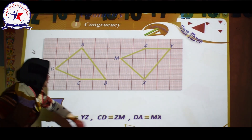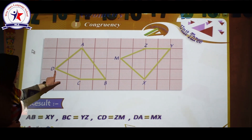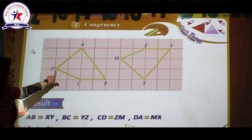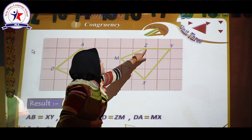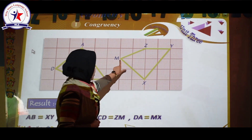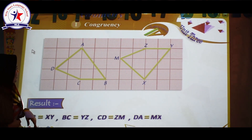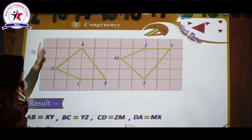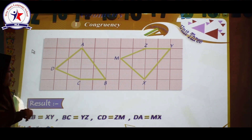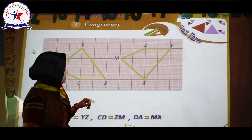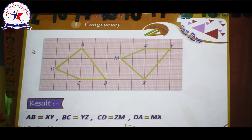Here the length of CD is exactly the same as ZM — they are exactly the same. And also DA is exactly the same as MX; they have the same length.